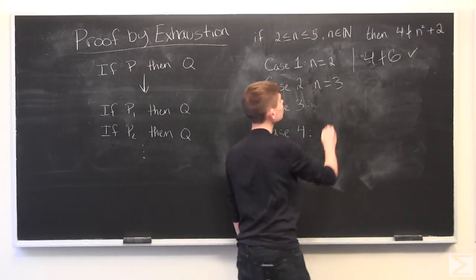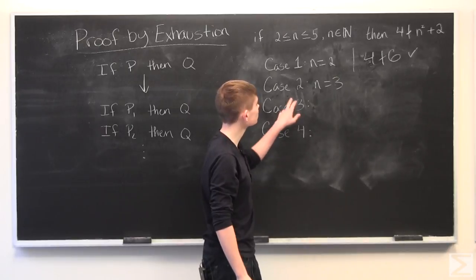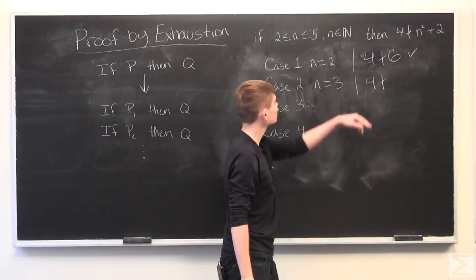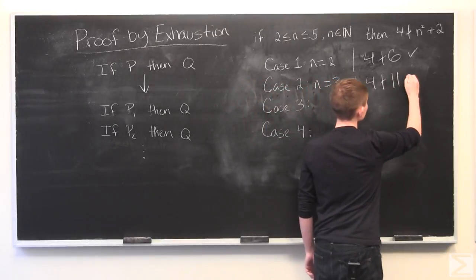With N equal to 3, for case 2, we will have that 4 does not divide 9 plus 2, which is 11.